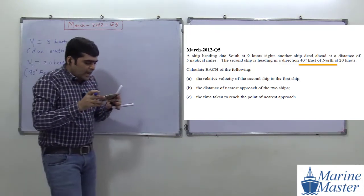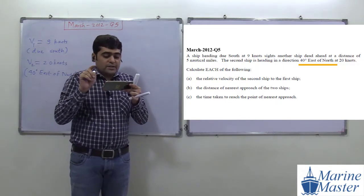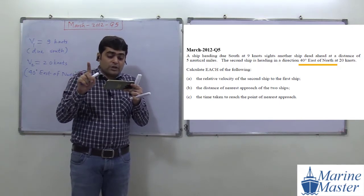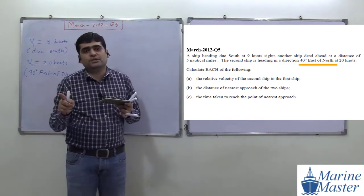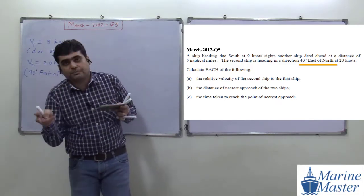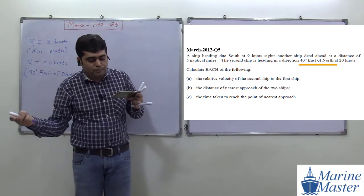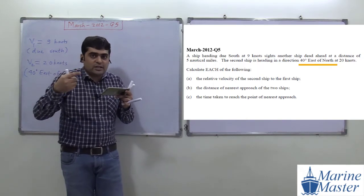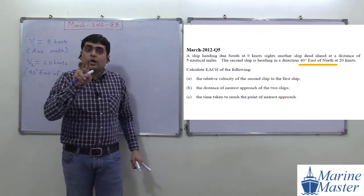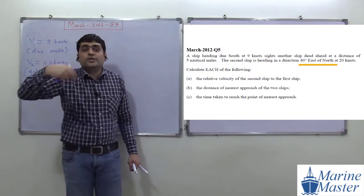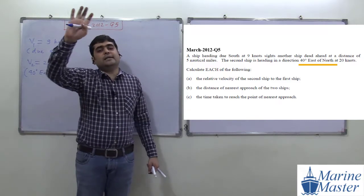In part A, they are asking the relative velocity of the second ship to the first ship. 'To the first ship' means with respect to the first ship. So the observer here is the first ship, and we have to find the relative velocity of the second ship with respect to the first ship.